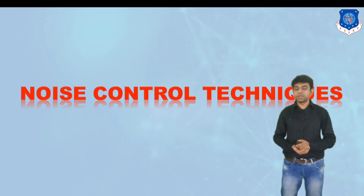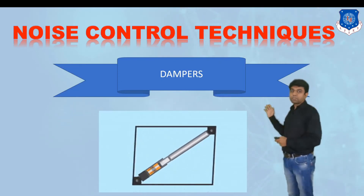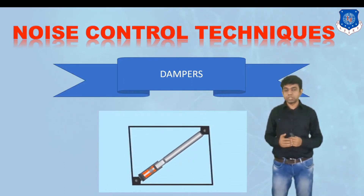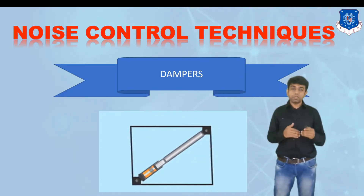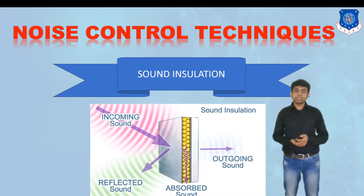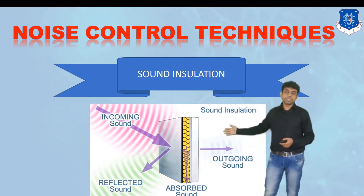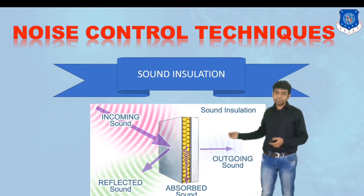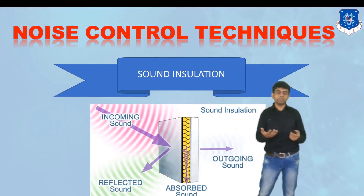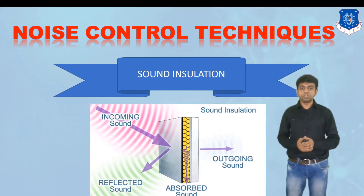Now let us understand the different ways to control noise. The first technique that comes to mind is the damper. In the suspension system, dampers are used to dampen vibrations and isolate them — once vibrations are isolated, noise is also reduced. Another technique is sound insulation materials. If incoming sound passes through a material that can absorb sound, the outgoing sound decibel level is lowered. The absorbed sound is converted into heat energy, and you will feel less sound after the insulation material.